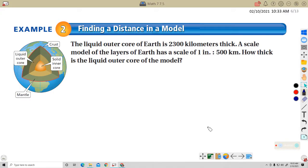Finding a distance in a model. The liquid outer core of Earth is 2300 kilometers thick. The liquid outer core. I guess that's this part here. That's kind of like a brown area. A scale model of the layers of Earth has a scale of one inch to 500 kilometers.